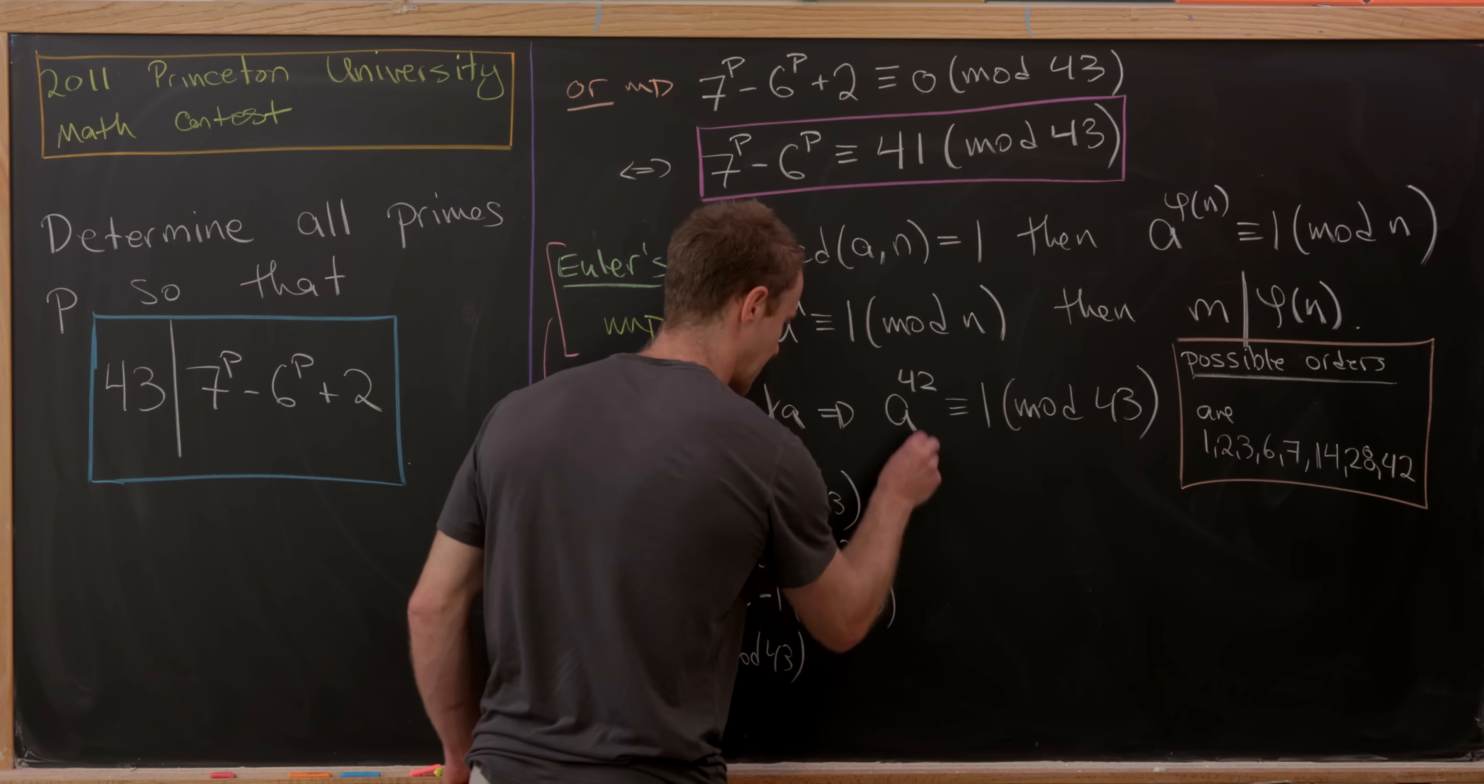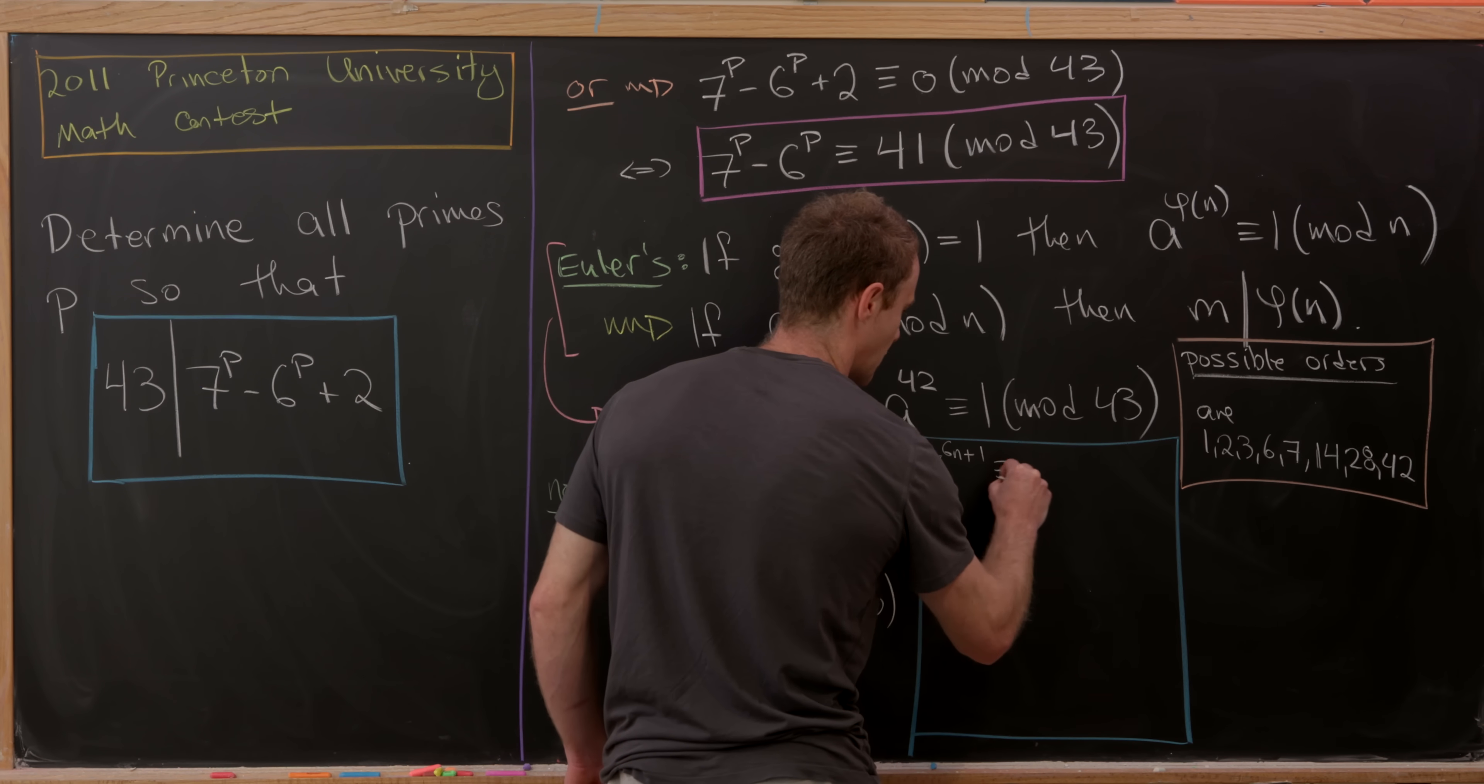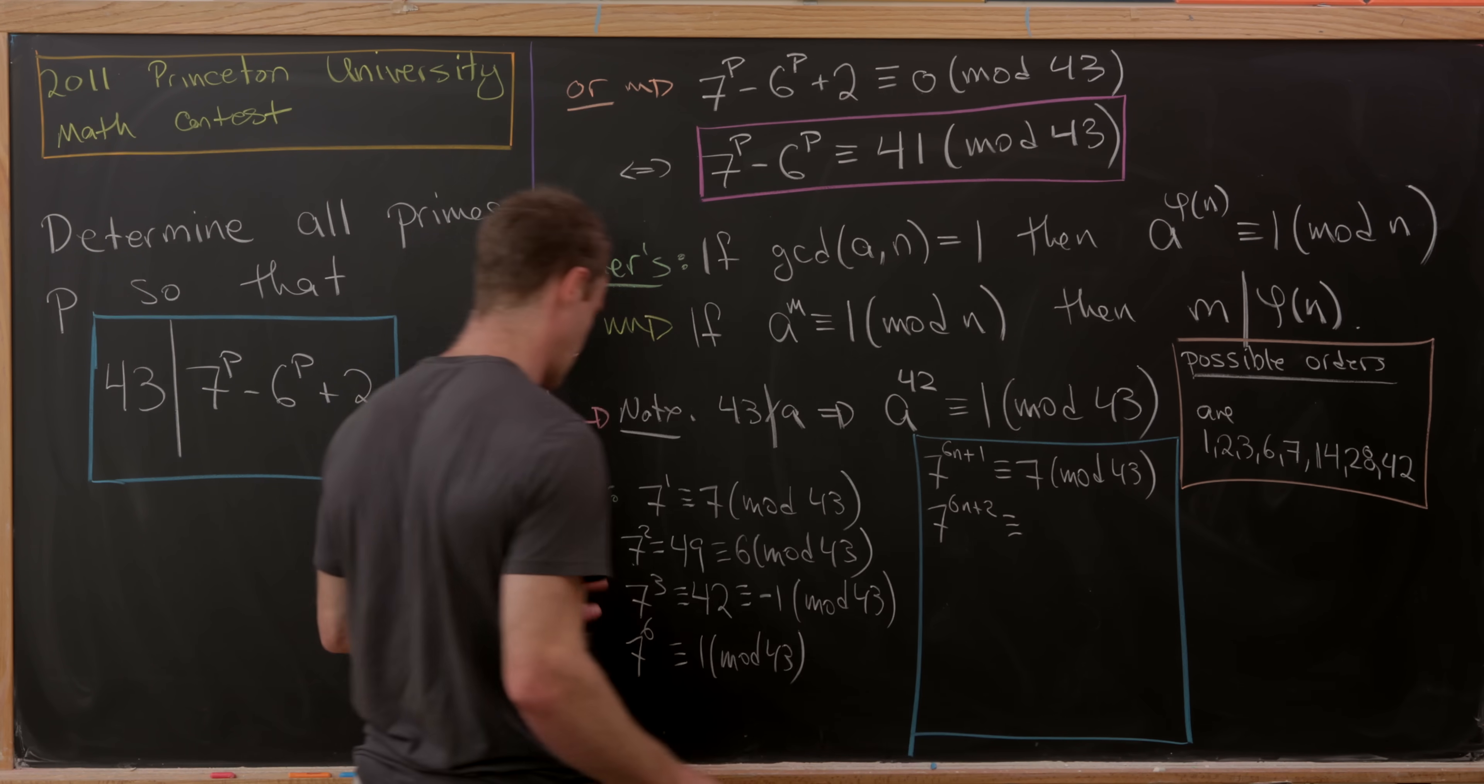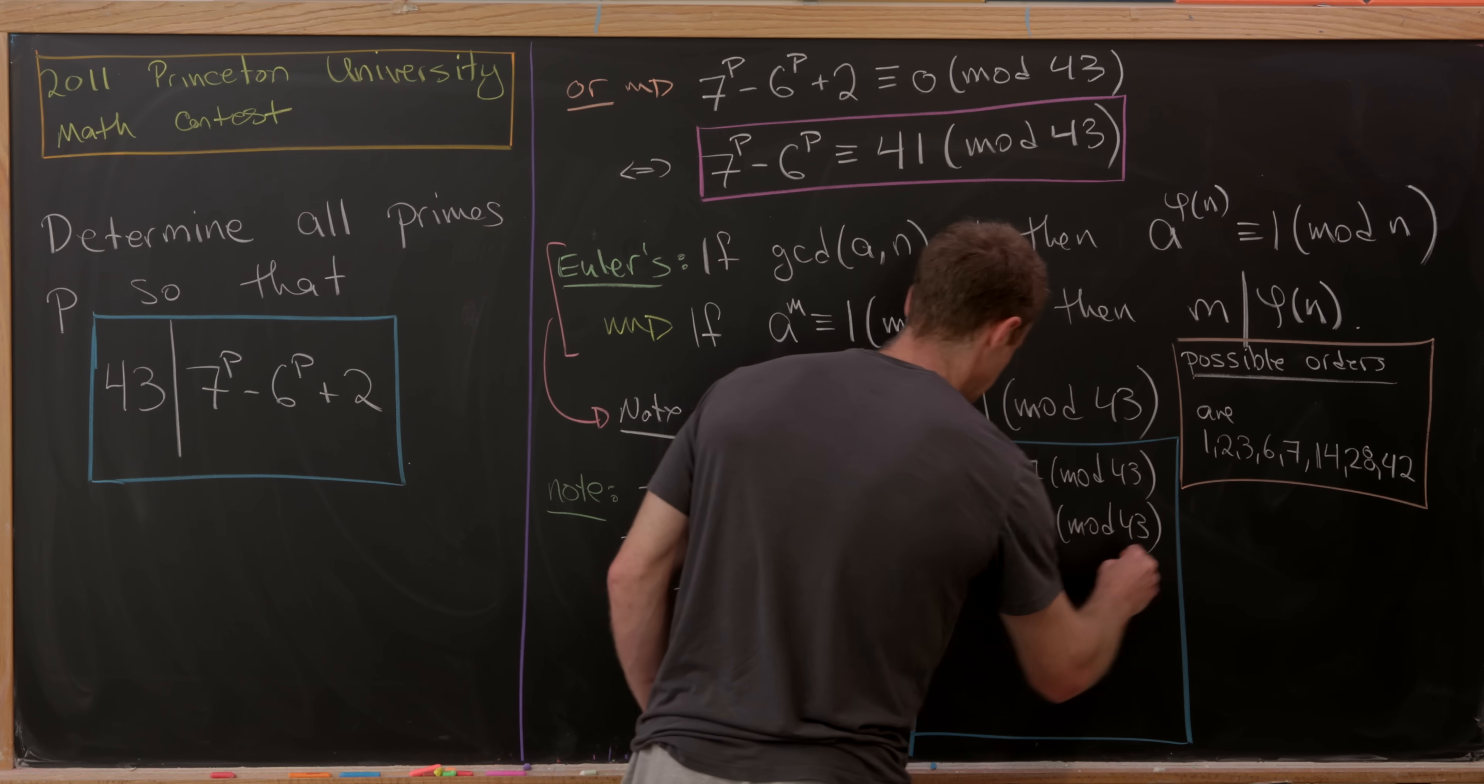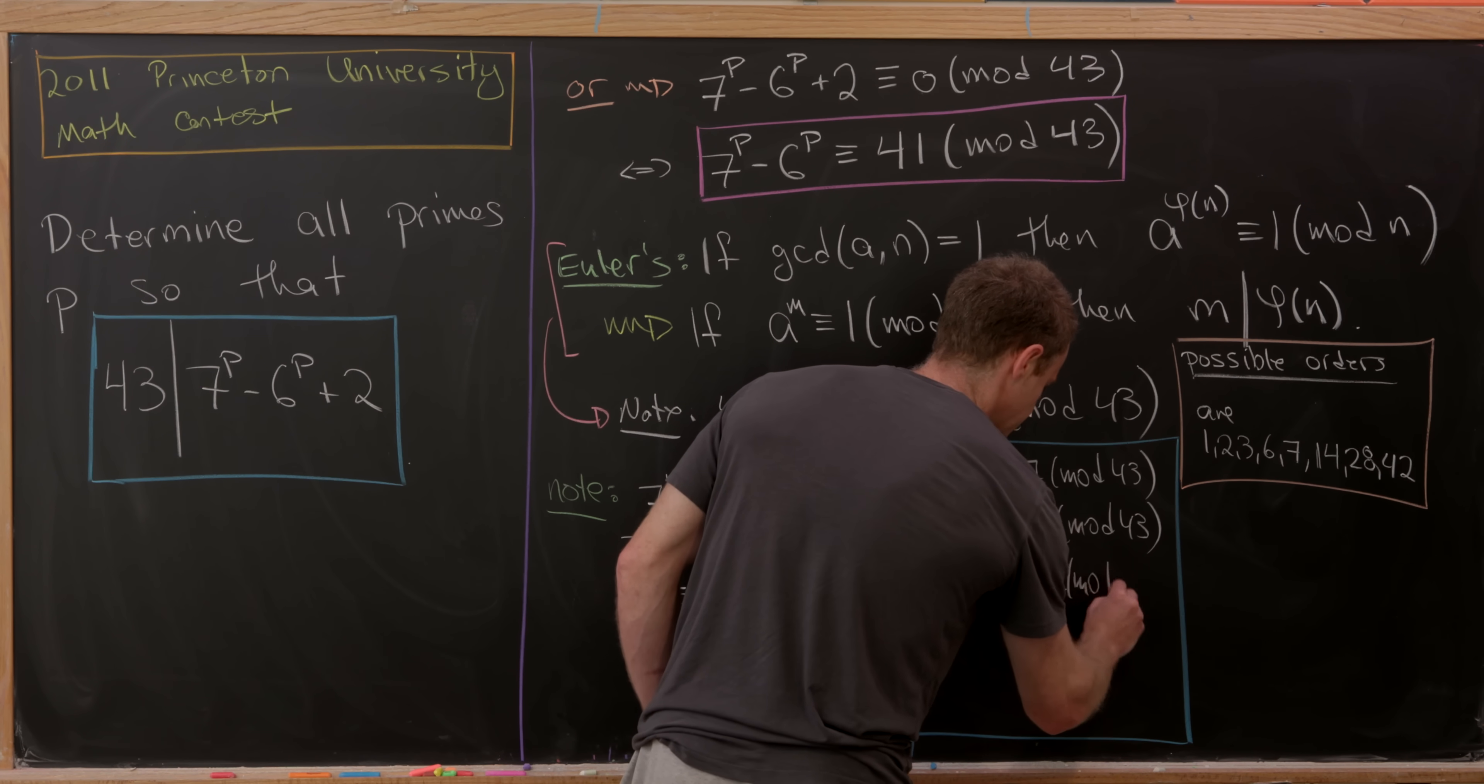The chart goes like this: 7^(6n+1) is always congruent to 7 mod 43. Then 7^(6n+2) is congruent to 6 modulo 43. And then 7^(6n+3) is congruent to -1 or 42 modulo 43.